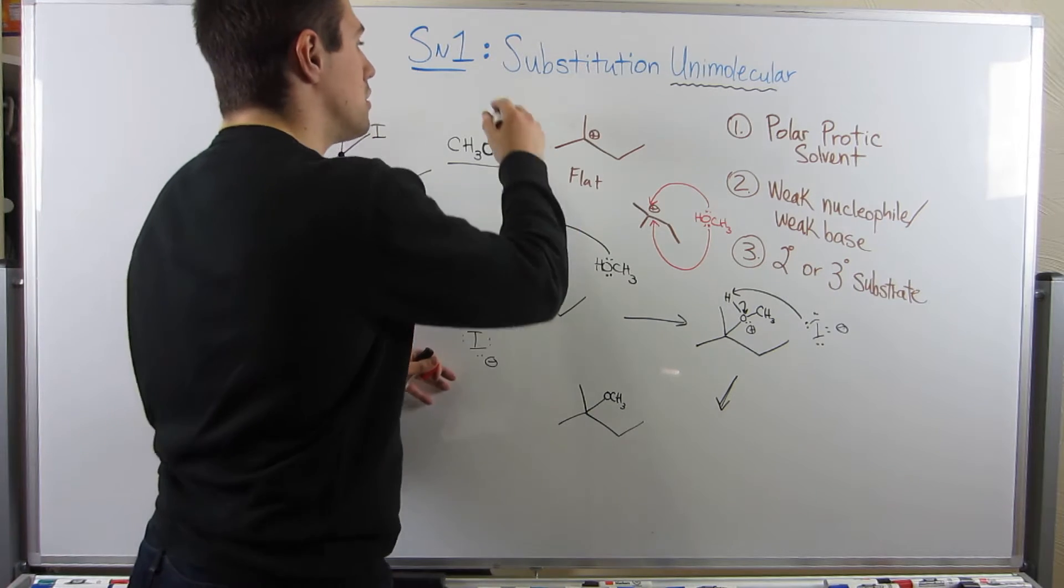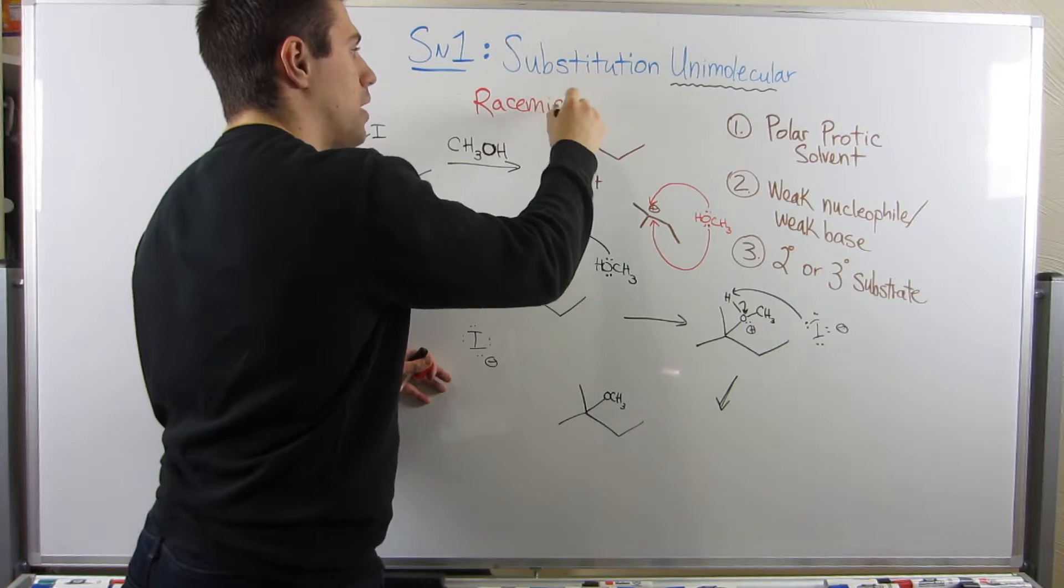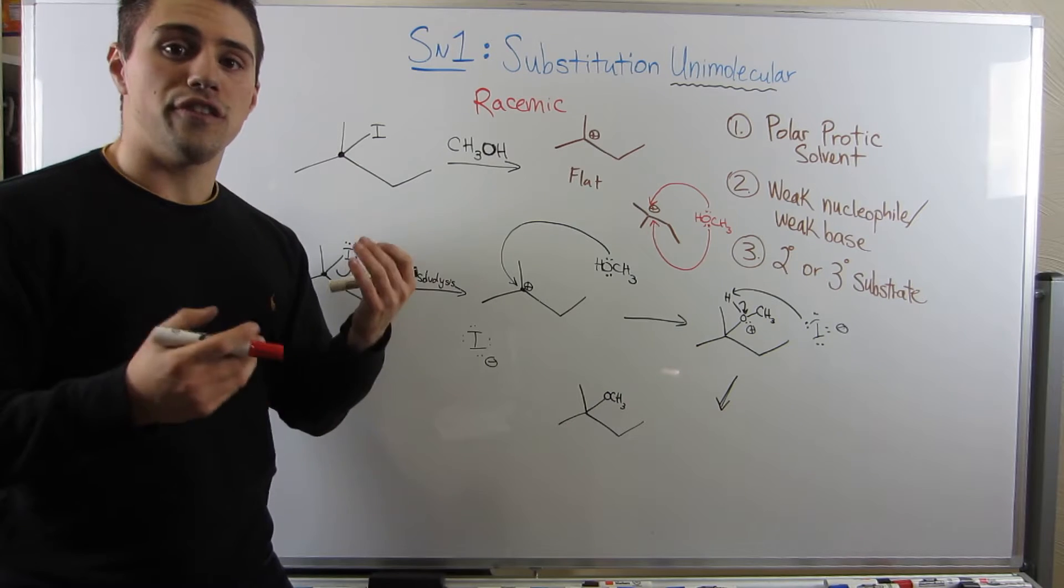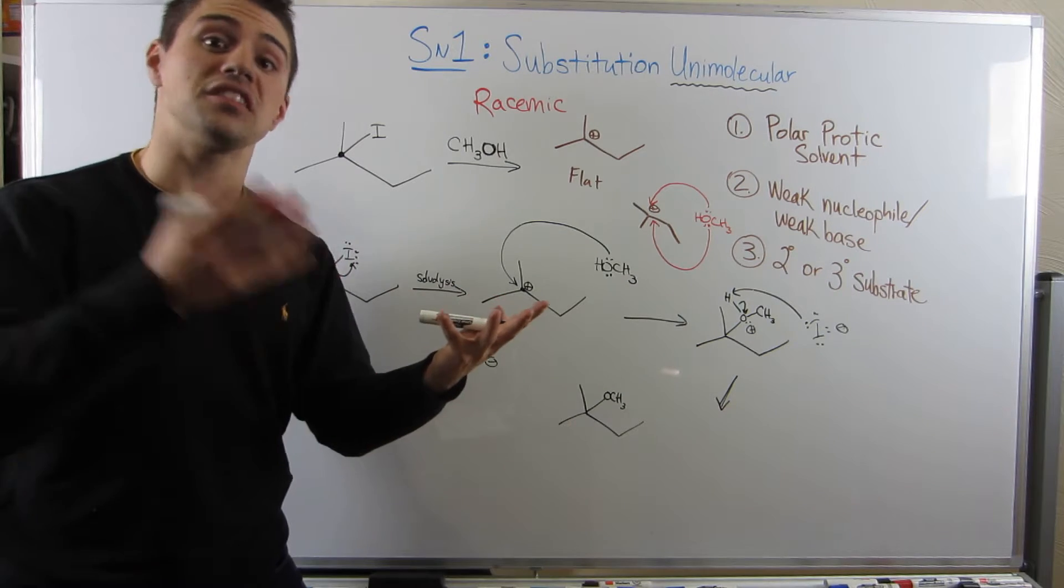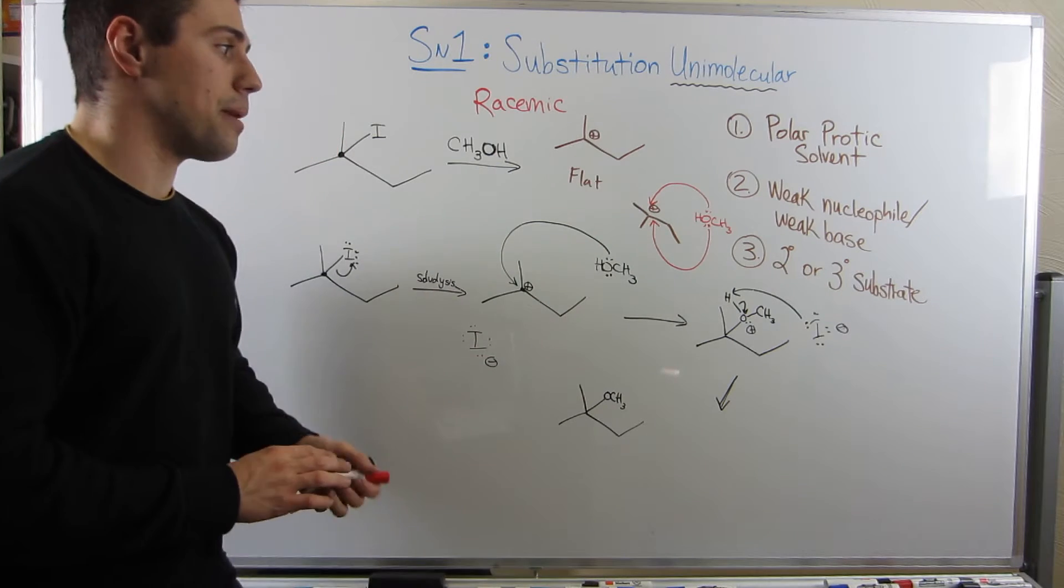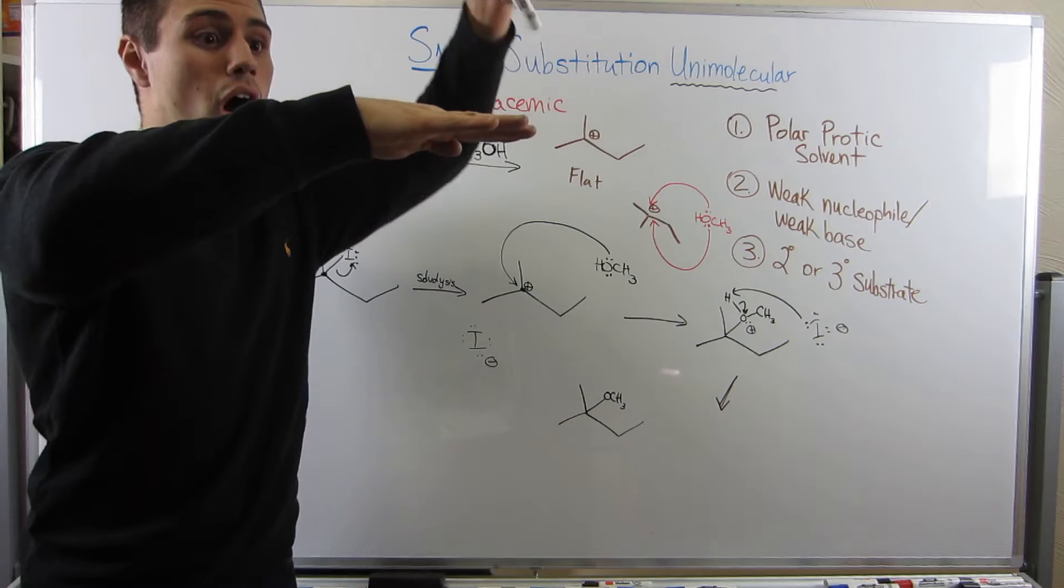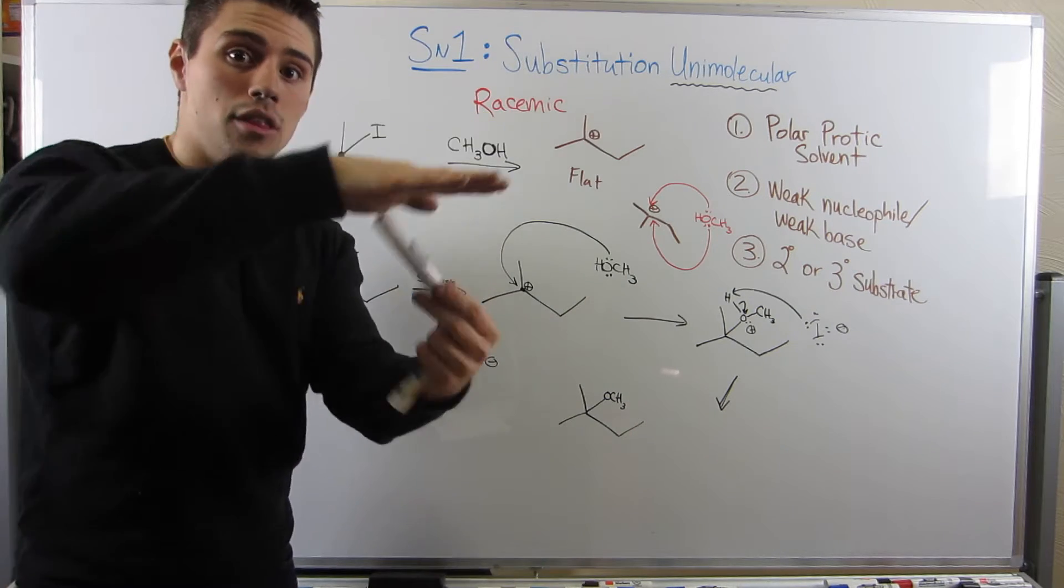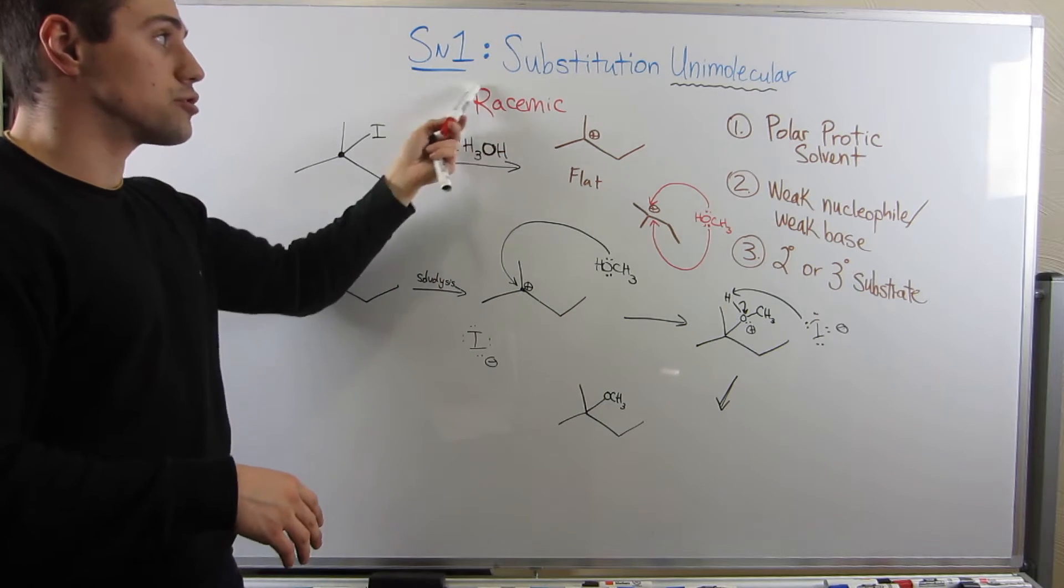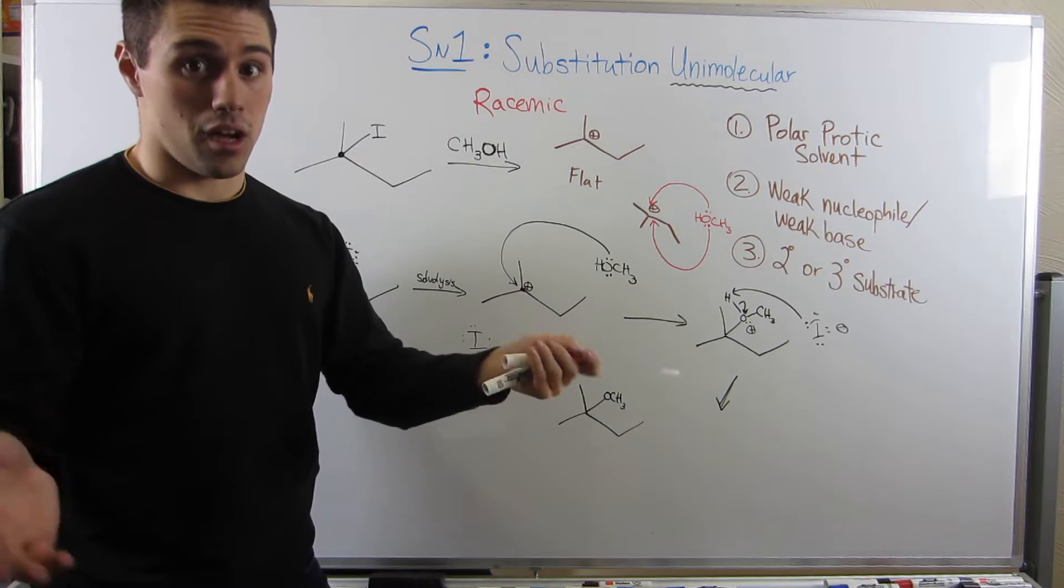And I don't know if I mentioned this word or not, but that type of mixture is called a racemic mixture. Because you have 50% of a wedge and a dash at that stereocenter, you have 50% enantiomer, 50% the other enantiomer. So, whenever you attack a carbocation, remember, it's trigonal planar, it's flat. You can attack on top, or you can attack below. There's no preference from your nucleophile, and that gives you a racemic mixture, which is 50% one enantiomer, 50% the other enantiomer.